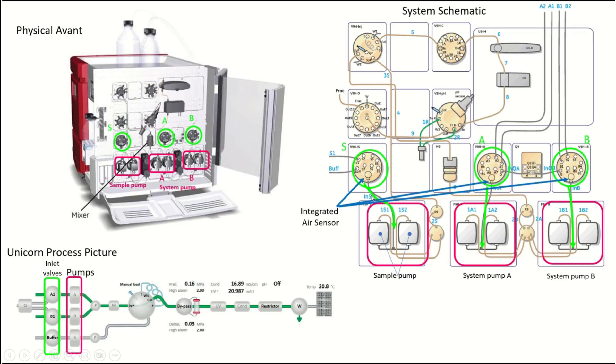Each of the inlet valves has an integrated air sensor, and this is really helpful. You should have these on for most of your chromatography runs. The A and B air sensor is really helpful for protecting the column. The S air sensor is helpful for telling the system when your sample is being loaded if that's how you're loading your sample using the sample pump.